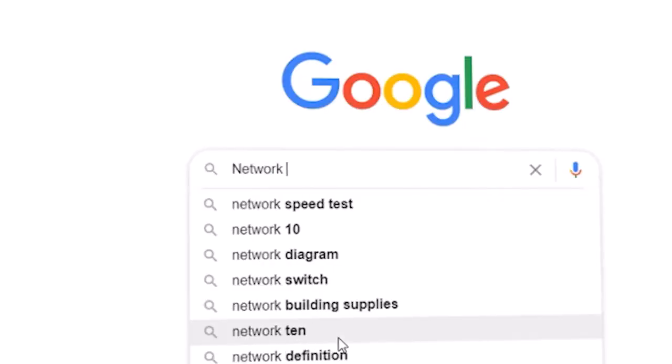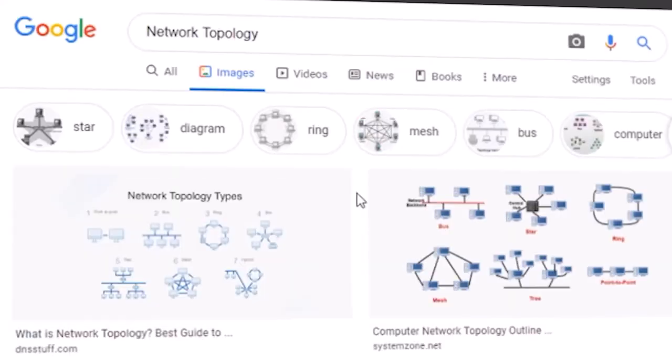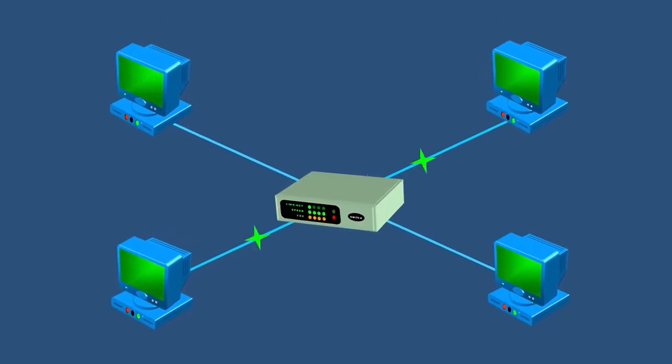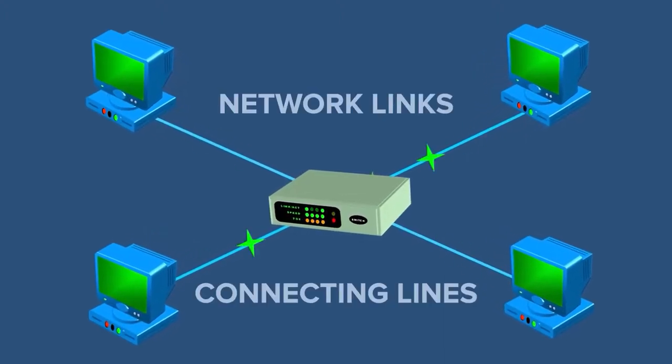A network topology is a substantial arrangement of a network in which all nodes connect to each other using networked links or connecting lines.